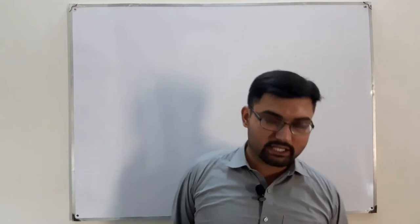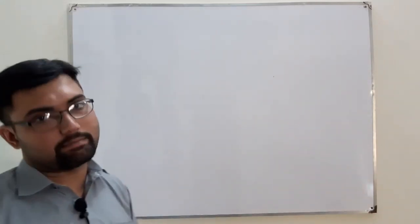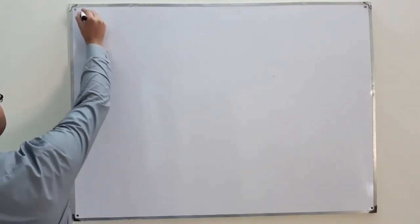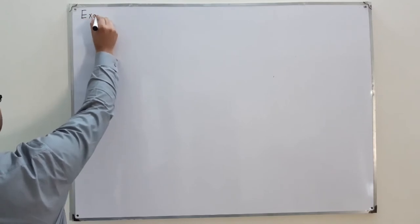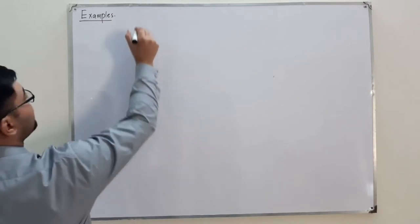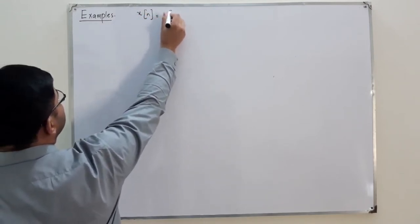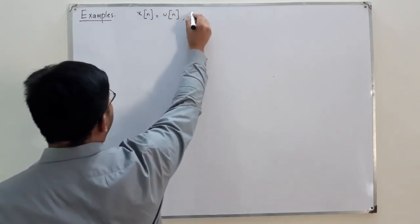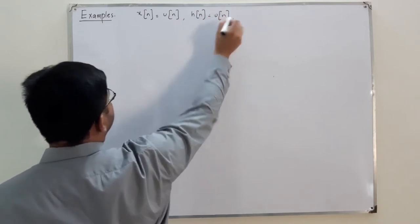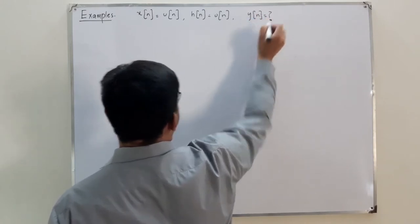Assalamu alaikum. Today we have two more simpler examples on the convolution sum in the discrete time domain. The input signal is given as a step signal, and the impulse response of the system is also a step signal. We are asked to find the convolution sum.